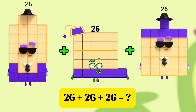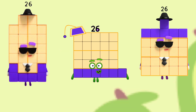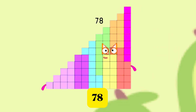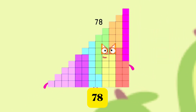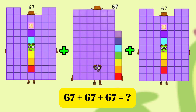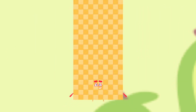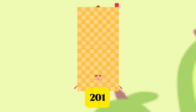26 plus 26 plus 26 is equals to 78. 67 plus 67 plus 67 is equals to 201.